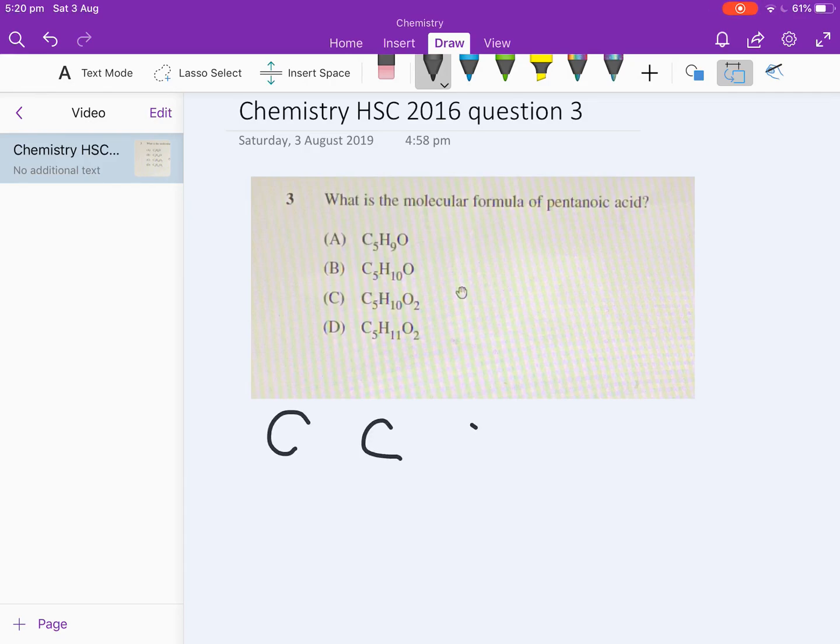So I put one, two, three, four, five carbons in a straight line. The an means single bonds and I would place single bonds between each of the carbon atoms.